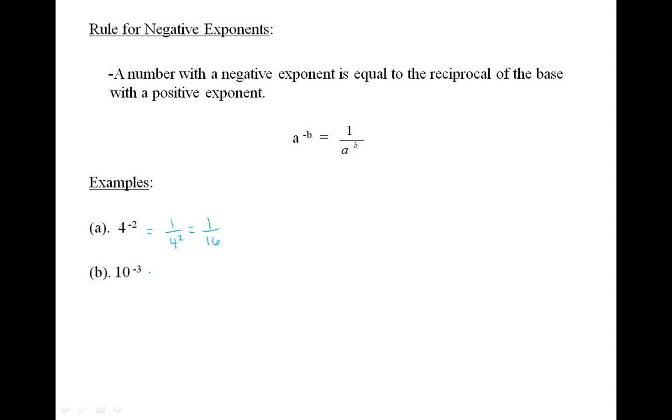Let's look at another example. Ten to the negative three is equal to one over ten to the three, which equals one over 1,000.